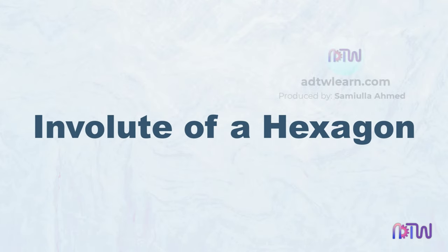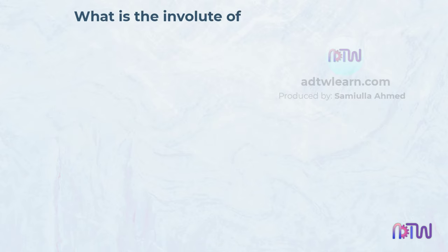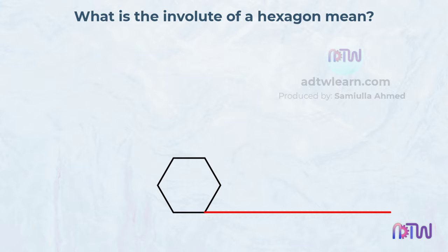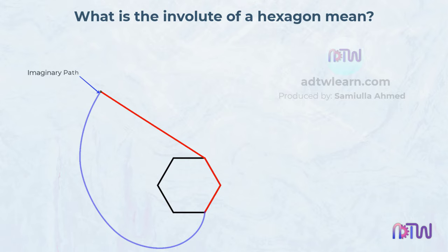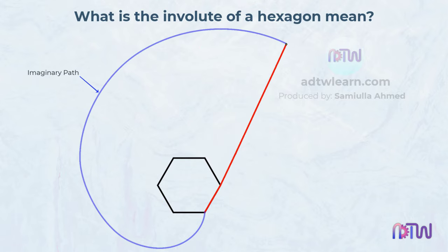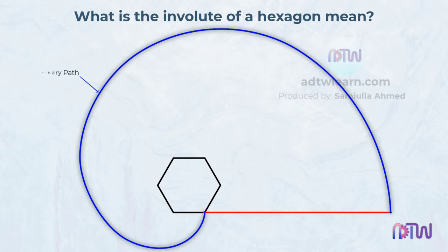Involute of a hexagon. In this video, we will learn how to draw an involute for a hexagon. What does the involute of a hexagon mean? Consider this hexagonal shape has a string bound on it. When this string is unwound from this hexagon, the imaginary path traced by the endpoint of the string — the path traced while unwinding — is called the involute of this hexagon.